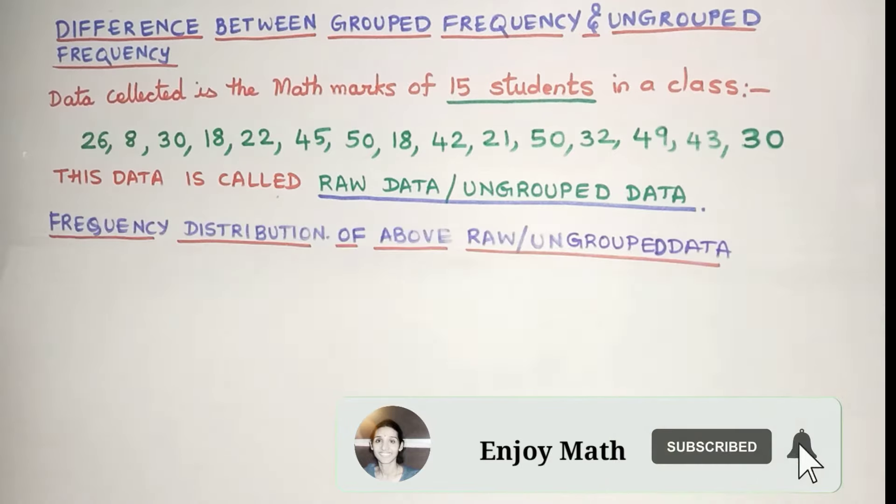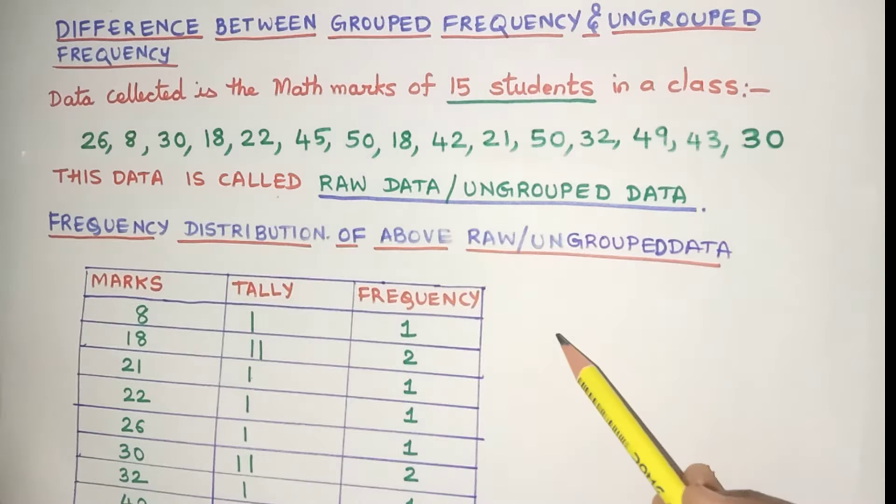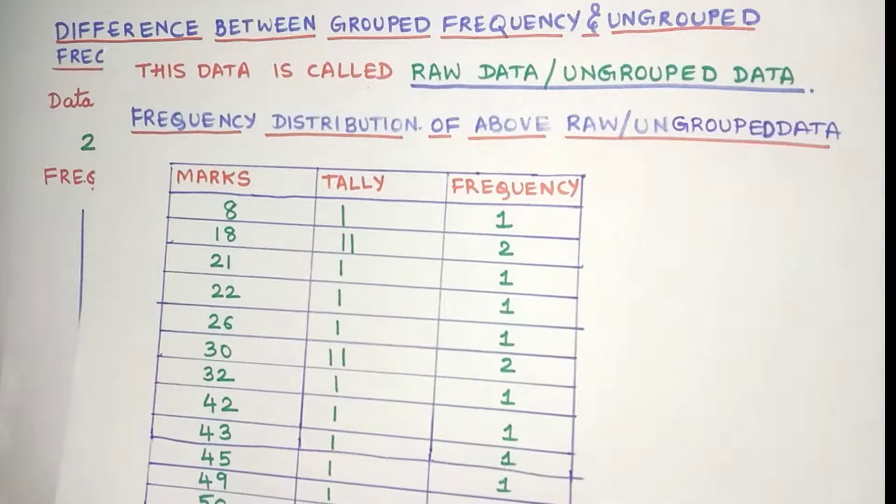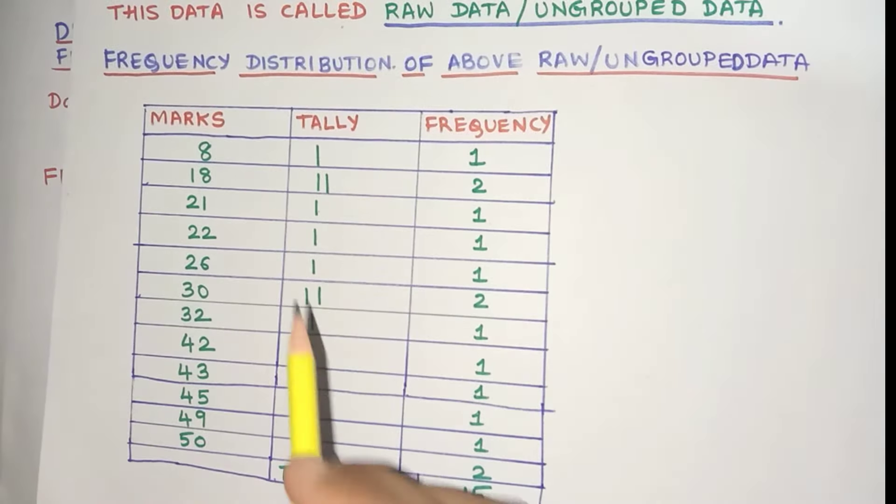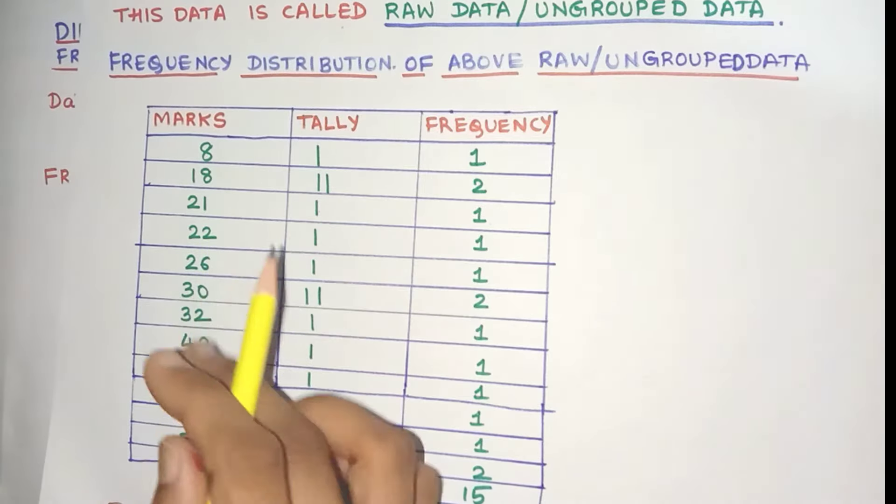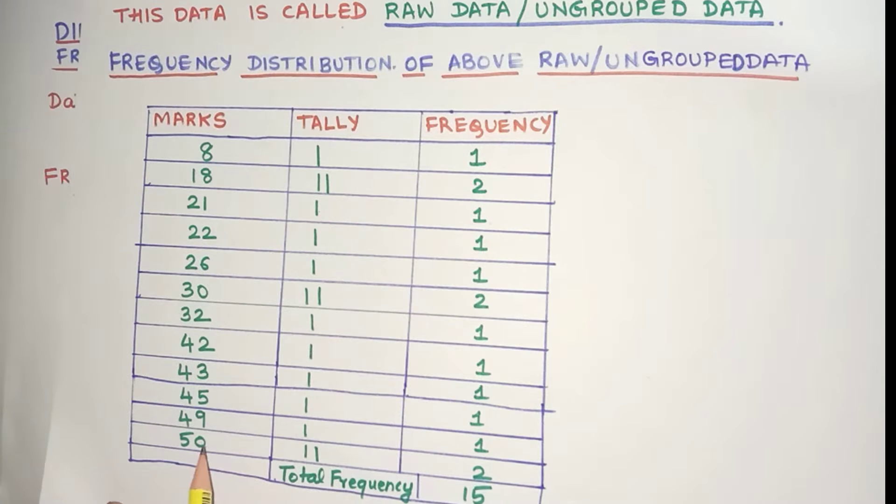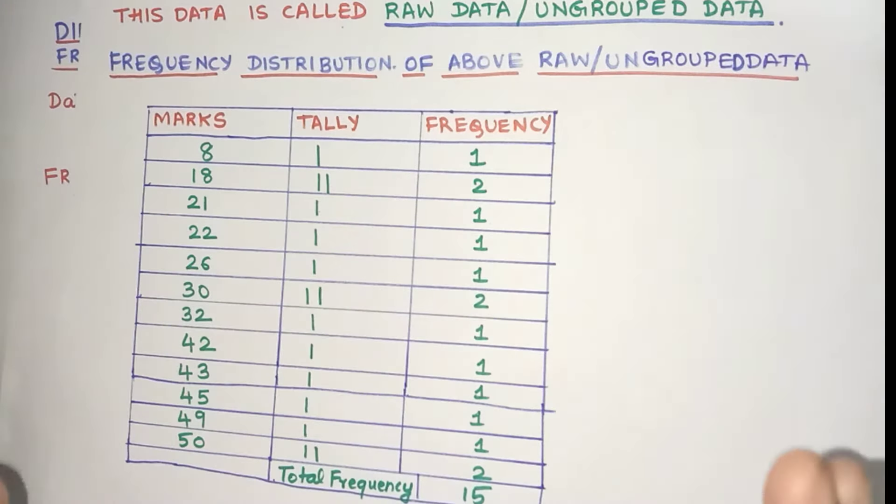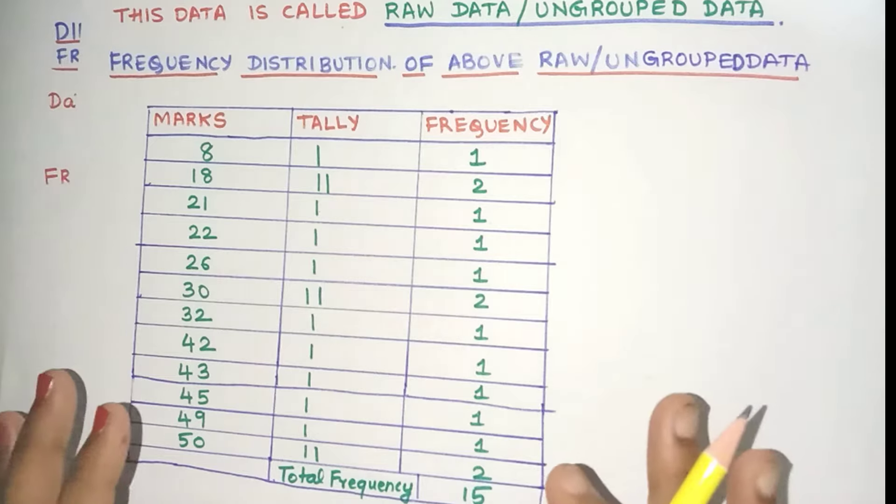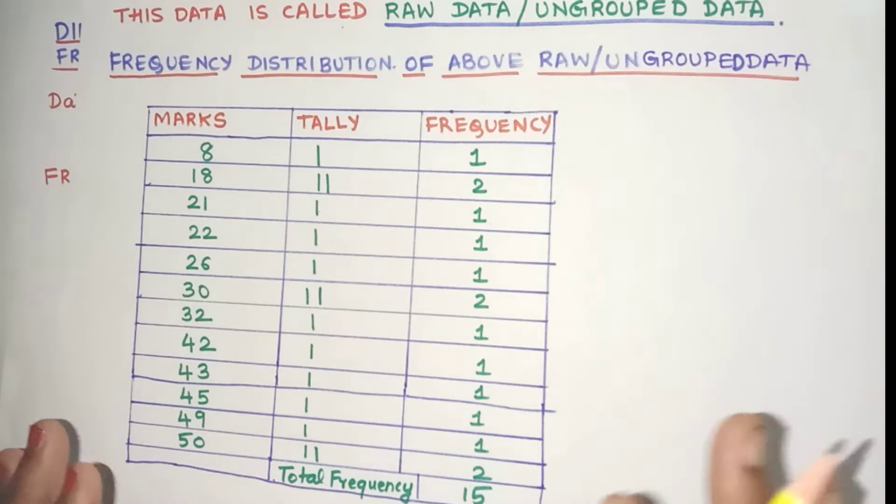Now the frequency distribution for this ungrouped data would look like this. As you can see, these are the marks, the tally and the frequency. Again friends, did you observe that you can find out the frequency of the individual marks? See, there are two students who got 50 marks, one student who got 8 marks. So even at this stage, the data that we are having is the raw data or the ungrouped data.